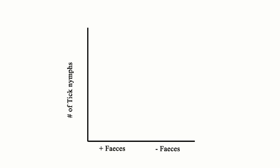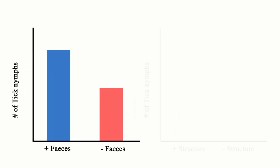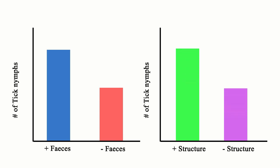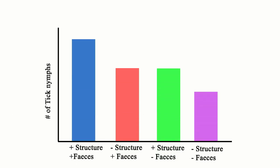Based on the theoretical framework, we assumed a positive relation between the number of nymphs and feces, as well as between nymphs and vertical structure, implying we expect more nymphs in the feces and vertically structured compartments compared to the control. Additionally, we expected an interaction effect between the presence of feces and the presence of vertical structure, as this compartment implies both the presence of a host and cover for hosts. Consequently, we expect the highest number of nymphs in the structure-plus-feces compartment.